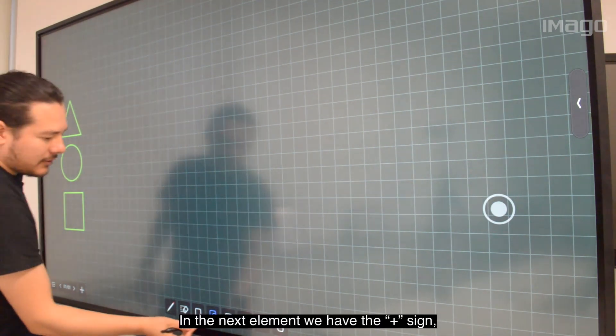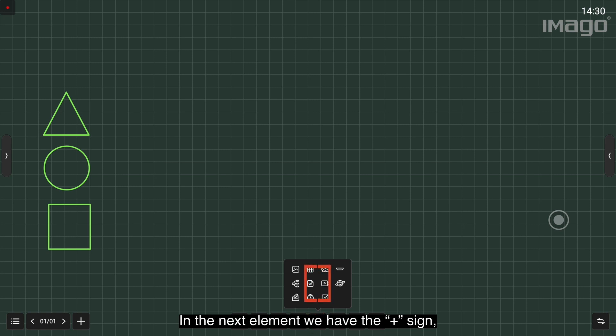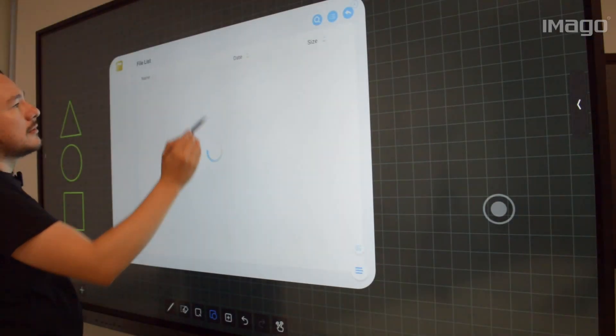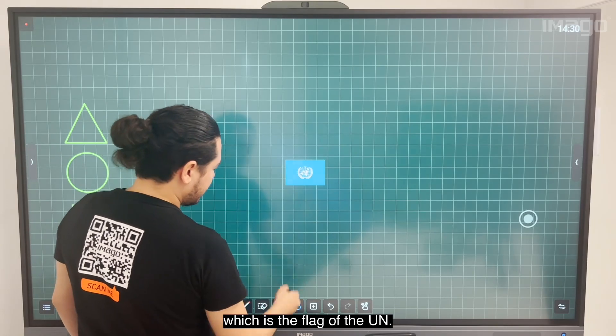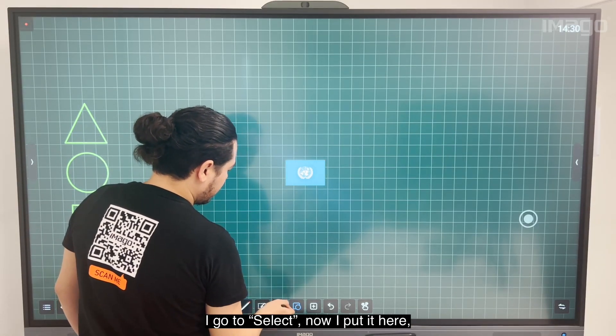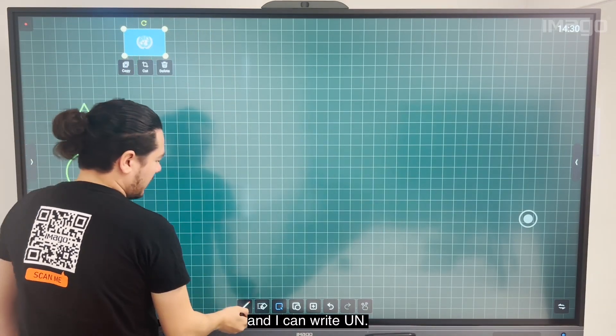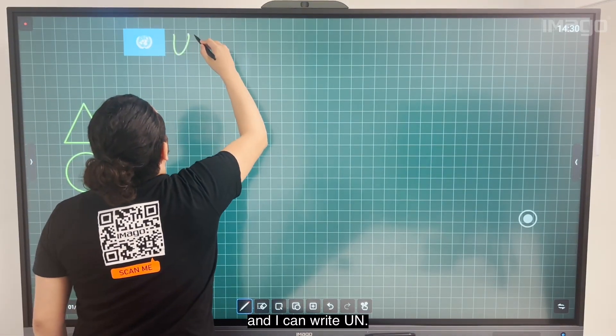In the next element we have the plus sign with different options. The first one is to add any kind of picture. For example, I will add this one which is the flag of the UN. I'm going to select it and put it here, and I can write 'UN'.